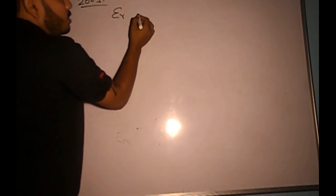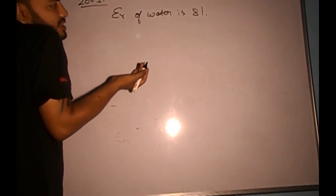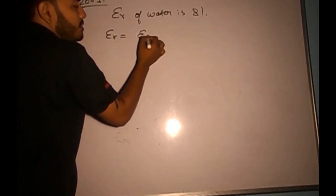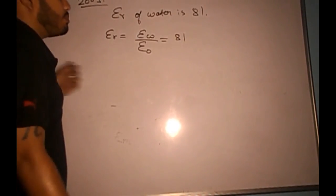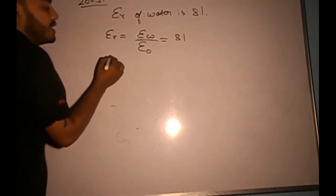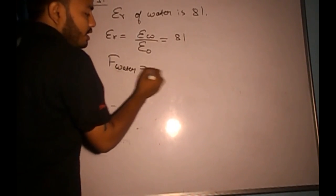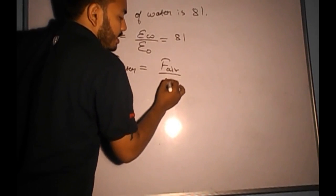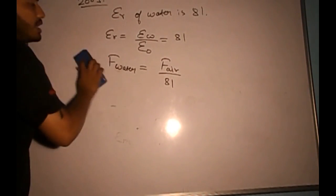Now solving an ISC Board question from 2009: the relative permittivity of water is 81 — what does this statement mean? This means the ratio of the permittivity of water to the permittivity of air is 81, or the permittivity of water is 81 times the permittivity of air. Alternatively, the force between two charges immersed in water decreases by a factor of 81 compared to the force between them in air.